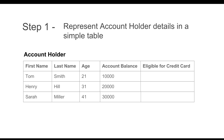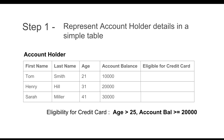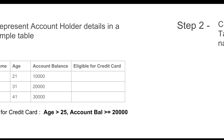We do not know the eligibility for credit card yet, so let us put in a simple condition: if age is greater than 25 and account balance is greater than or equal to 20,000, then the person is eligible for a credit card. This is a processing step, so it will go into a function and the results will come back to this table. Let us see how to do it in Java.